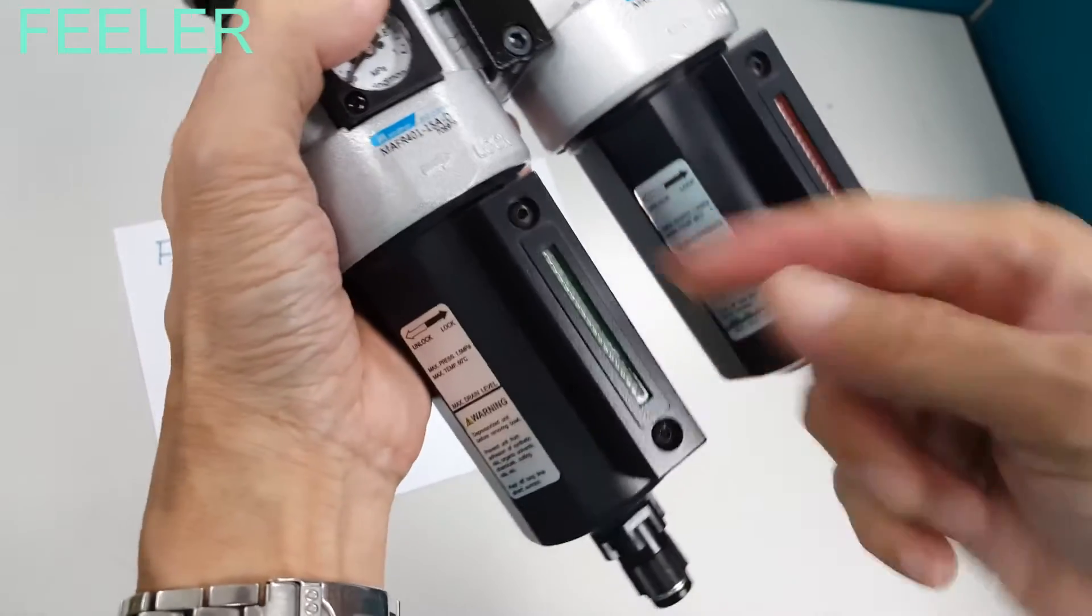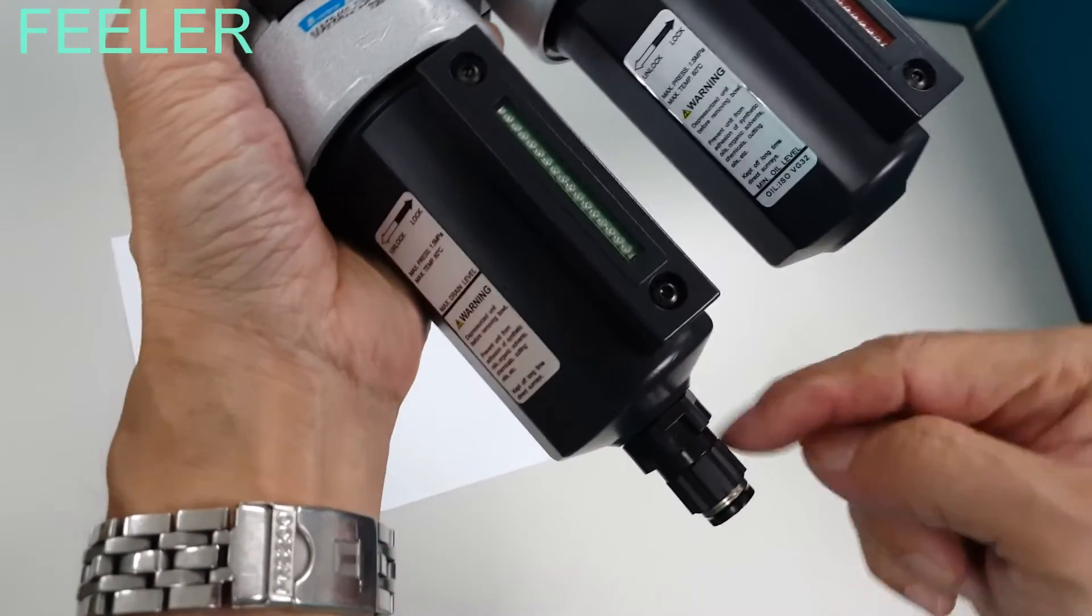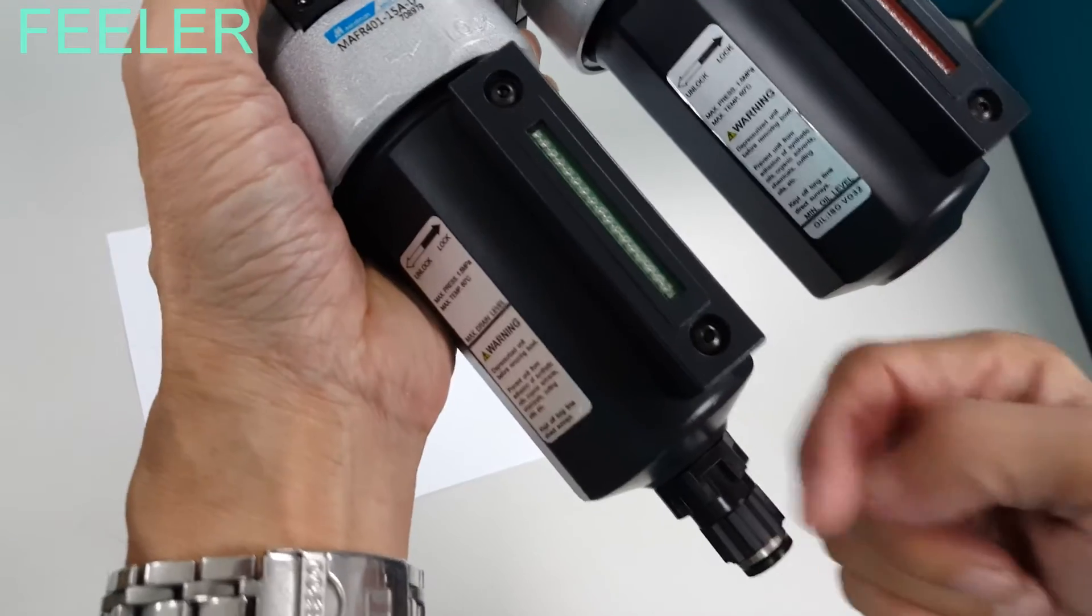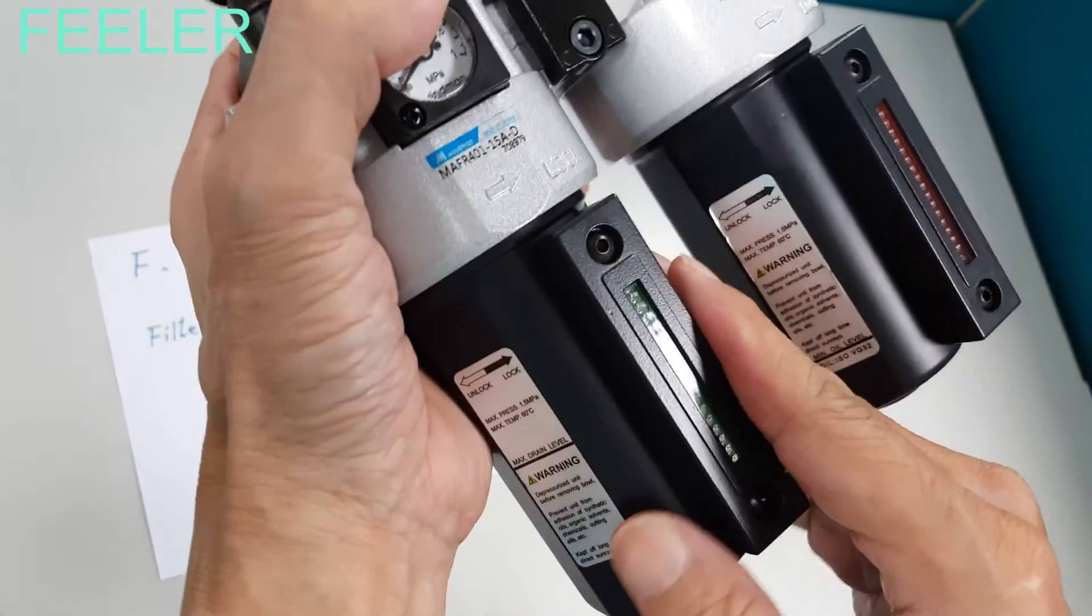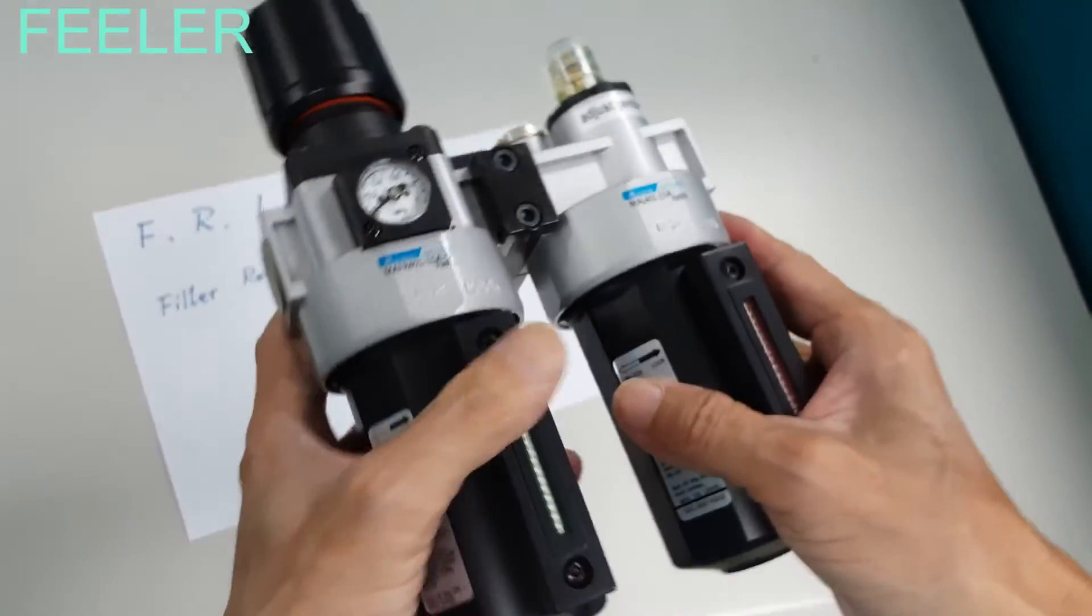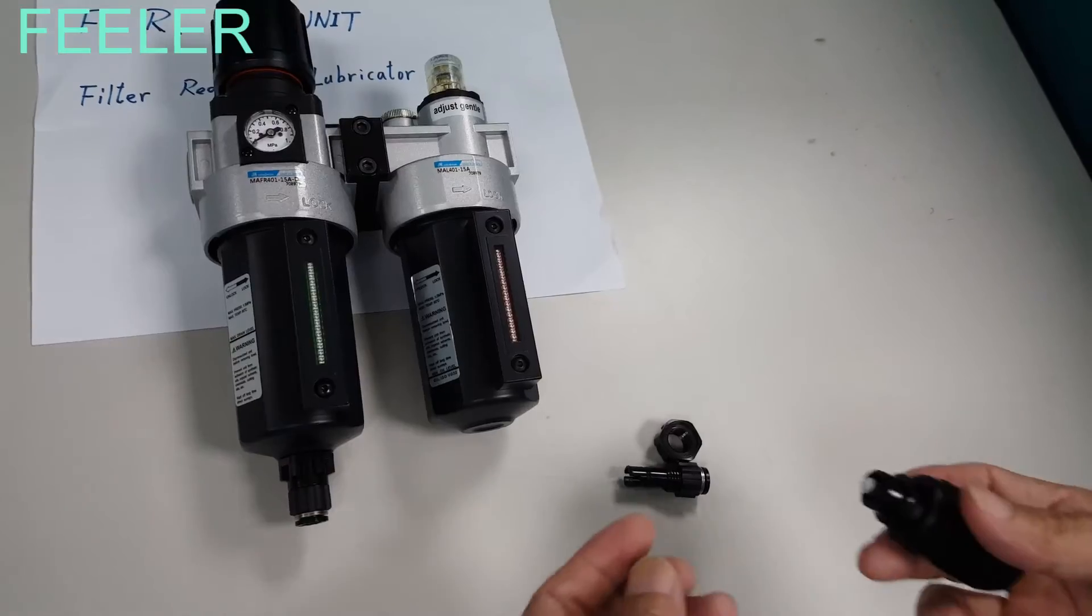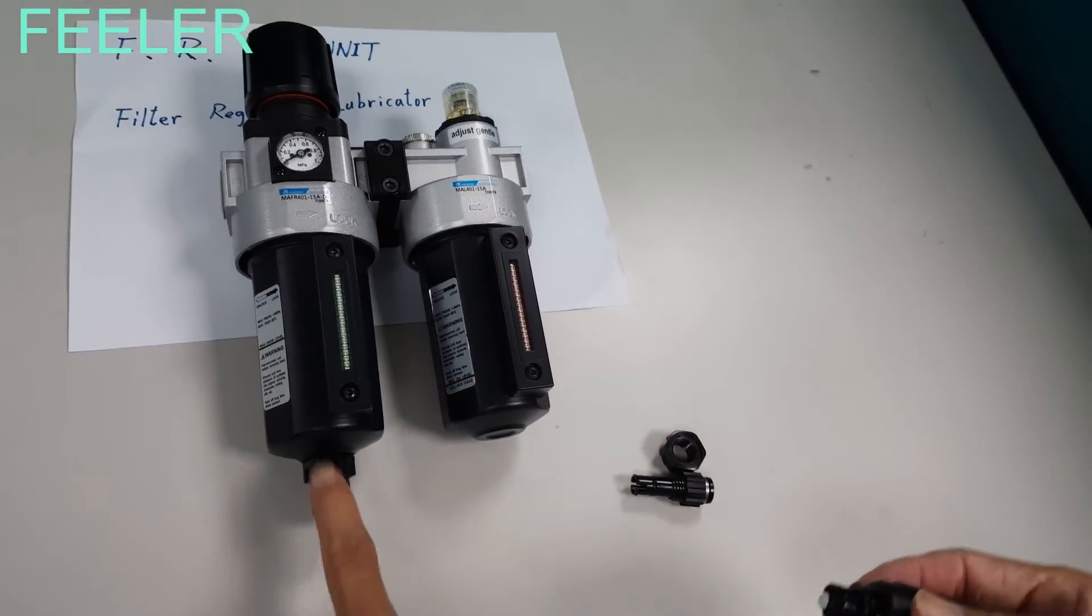So when this one is dirty, you have to clean. Otherwise, air will leak from here. When air leaks, it means this one is dirty. You must clean. So it's very simple.